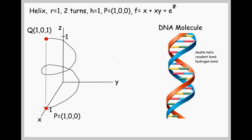Here's the helix. It starts at point P, radius one, two turns to a height of one. As a point of interest, the DNA molecule is actually a double helix.